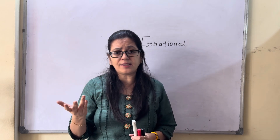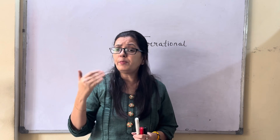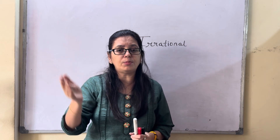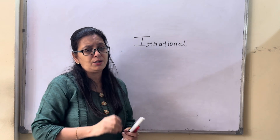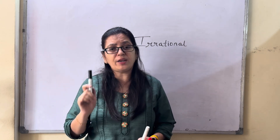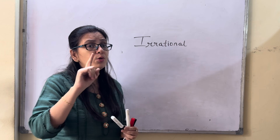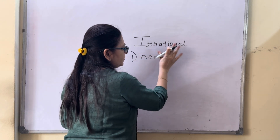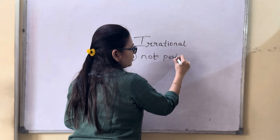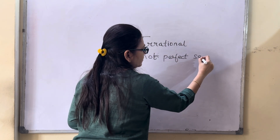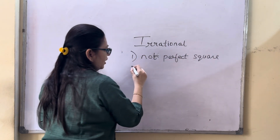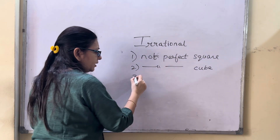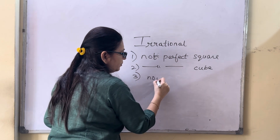For example, square root of 6 — 6 is not a perfect square. But if I take square root of 4, which is 2, that is a rational number. Irrational numbers are not perfect squares, they are not perfect cubes, and they are all non-terminating decimals.